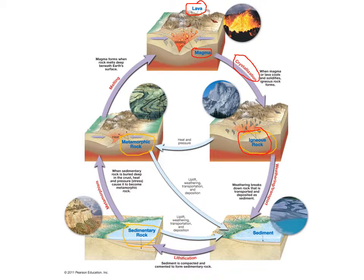If you break up igneous rock or any other type of rock through weathering, and then transport or erode it somewhere else, you create sediment — sand, silt, clay, gravel, boulders. If we take those sediments and put them somewhere low, like a lake basin, ocean basin, or valley bottom, and layer and compact them, we have lithification — where sediment is compacted and cemented into sedimentary rock. Sedimentary rock has layers, often contains fossils, and tells you a lot about Earth's history.